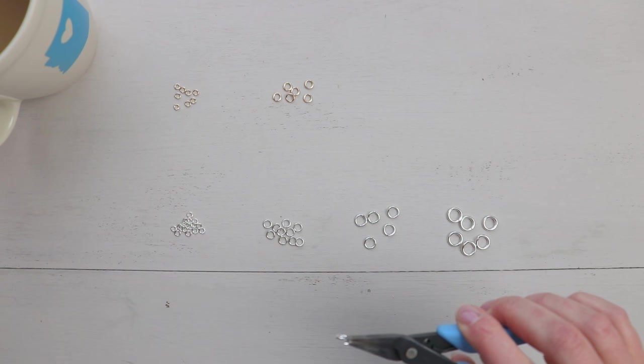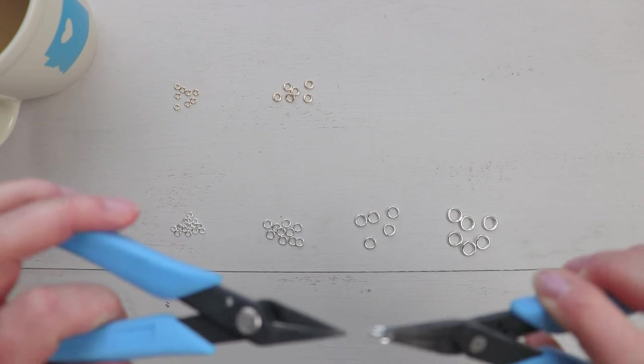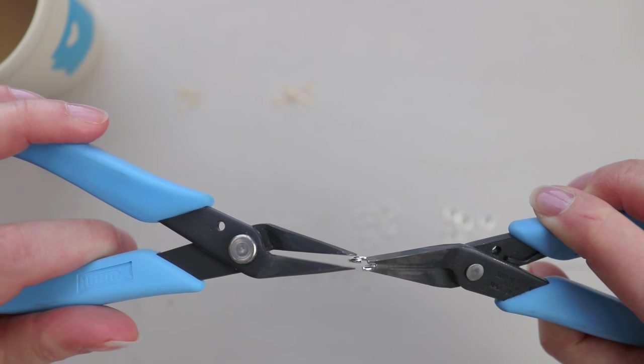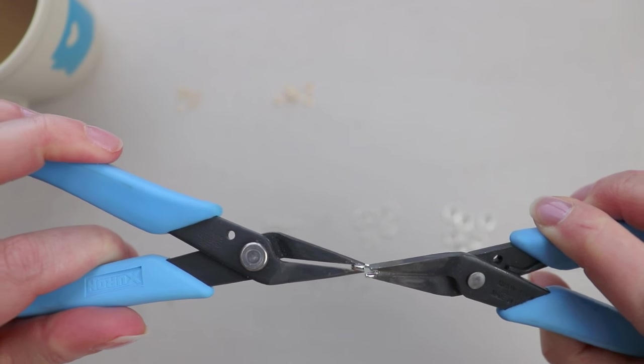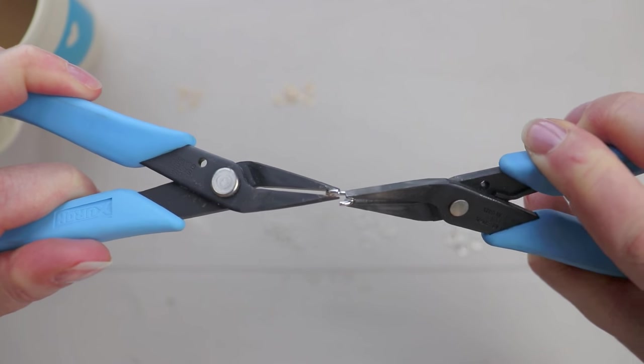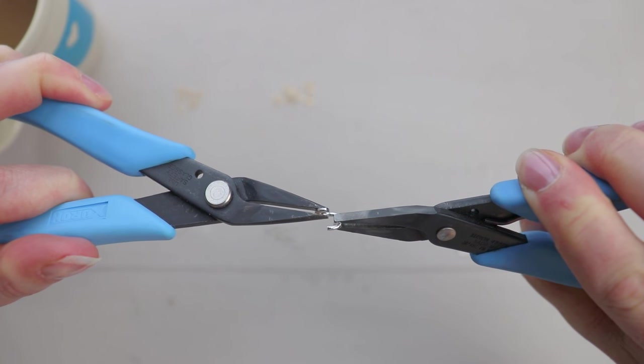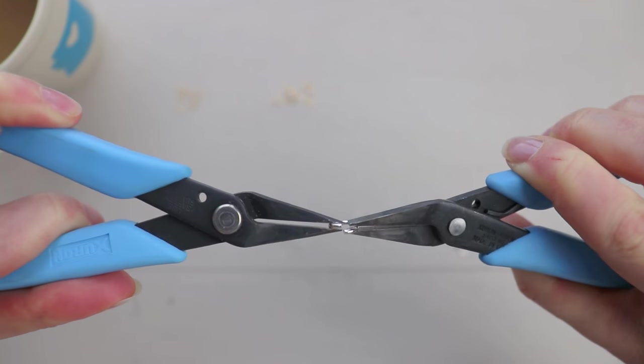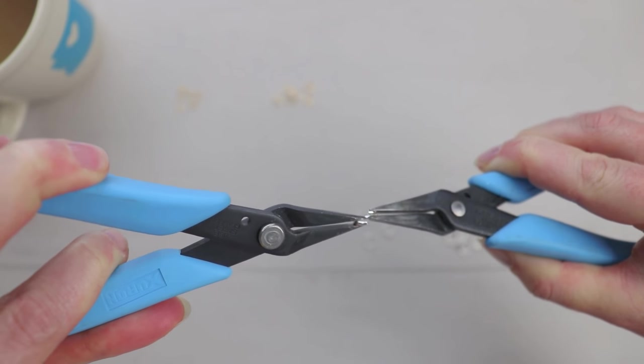I'm going to show you the resistance that you'll experience with these jump rings as you open and close them. When you're working to open and close jump rings, you want to grip both ends and open a jump ring by twisting it in this direction and sweeping the ends across one another.